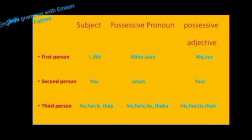This table gives possessive pronouns and possessive adjectives. First person: subject 'I' and 'we.' Possessive pronouns are 'mine' and 'ours.' And possessive adjectives are 'my' and 'our.'